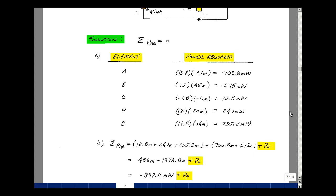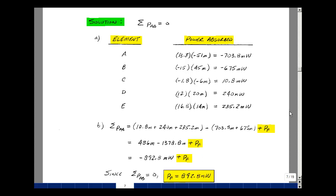Now let's add up all the absorbed power. Take the positive terms, which is 10.8 milliwatts, 240 milliwatts, and 235.2 milliwatts. Let's add up all the negative ones,